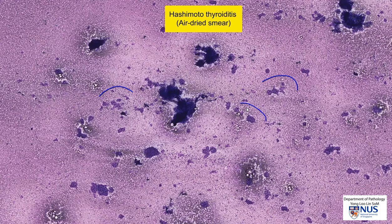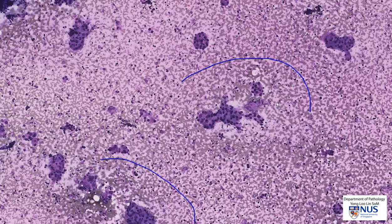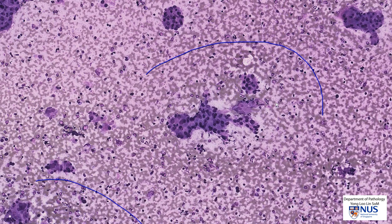We can see that it is moderately cellular. There are some sheets of follicular cells, and when we look at higher magnification, we notice that there are both follicular cells as well as quite a few dispersed cells in the background. There is not much colloid to be seen.